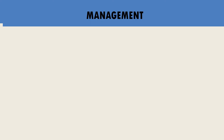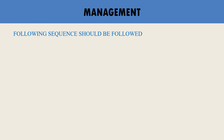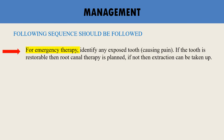The treatment of attrition is not fixed; it is dependent on the severity of the condition and the associated problems. For management, a specific sequence should be followed. In case of an emergency, the first step is to identify any exposed tooth causing pain — if the tooth is restorable, root canal therapy is planned; if not, extraction can be carried out.